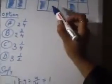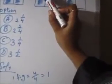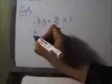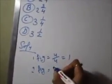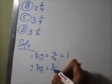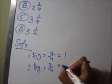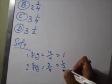For the second figure, the total number of sections are 1, 2, 3, 4, but the shaded portion is only 2. So for the second figure, if we convert it into a fraction, it is 2 by 4, which equals 1 by 2.